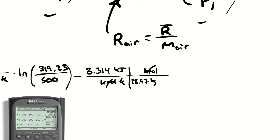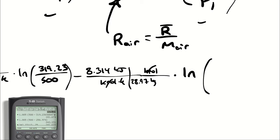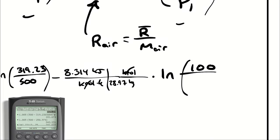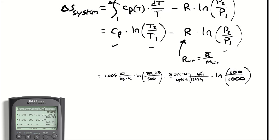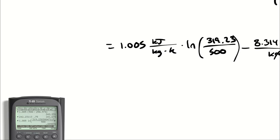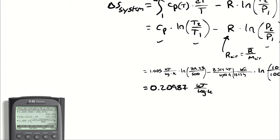Kilomole cancels kilomole so I'm left with kilojoules per kilogram kelvin then I multiply by the natural log of P2 over P1. P2 was 100, P1 was 1000. So calculator if you would please, it's going to be 1.005 times the natural log of 319.23 divided by 500 and we're subtracting 8.314 divided by 28.97 times the natural log of 100 divided by 1000, and I get 0.20987 kilojoules per kilogram kelvin.